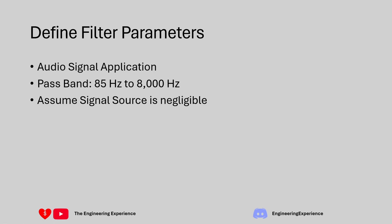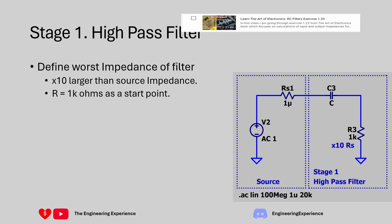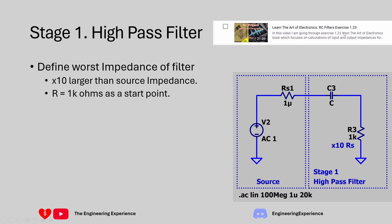As an assumption, let's assume that our signal source has a very low impedance and our load is very high impedance so we can ignore them for calculations. Let's design stage one, the high pass filter. On the circuit diagram I've got some source with a very low impedance and a high pass filter stage with a capacitor in series with a parallel resistor.